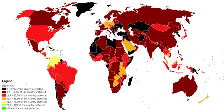Generally, protected areas are understood to be those in which human occupation or at least the exploitation of resources is limited. The definition that has been widely accepted across regional and global frameworks has been provided by the International Union for Conservation of Nature in its Categorization Guidelines for Protected Areas.